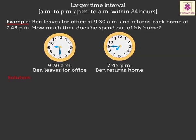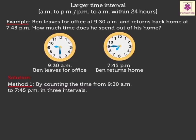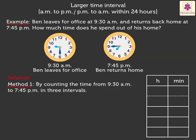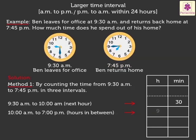Now, to solve this, there are two methods. Let's start with the first method, i.e. by counting the time from 9.30am to 7.45pm in three intervals. Firstly, count the minutes to the next hour, i.e. from 9.30am to 10am, which is 30 minutes. As we have to count the time till 7.45pm, we need to count the hours in between 10am to 7pm, which is equal to 9 hours. Lastly, find the minutes after 7pm up till 7.45pm, which is equal to 45 minutes.